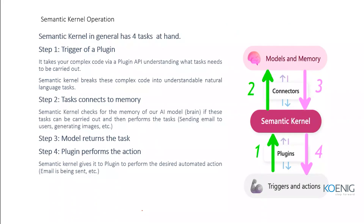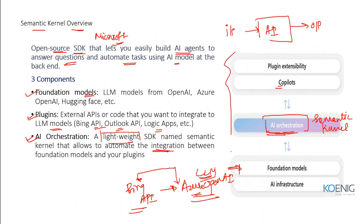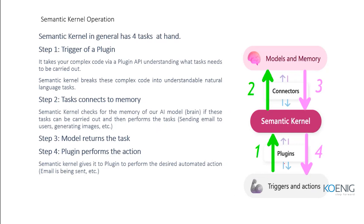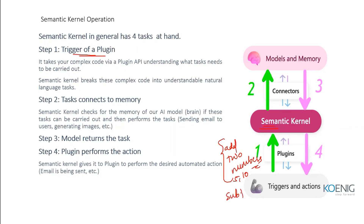How does the Semantic Kernel operation work? The diagram is essentially reversed. First, via the plugin, you pass a trigger or task. The Semantic Kernel takes complex input and breaks it down into smaller understandable tasks. For example, if you say 'add two numbers, 5 and 10, and also subtract,' the Semantic Kernel breaks that into two tasks: add and subtract.